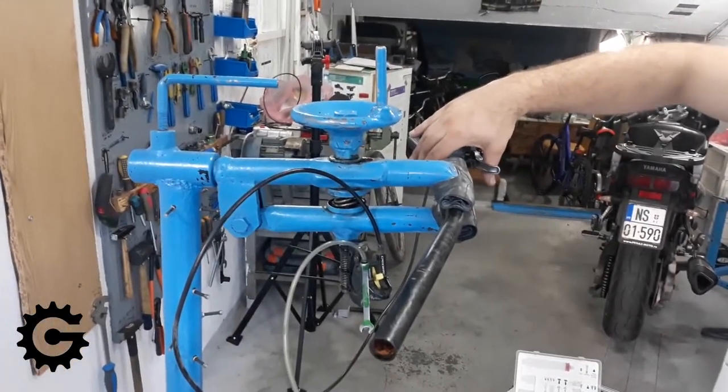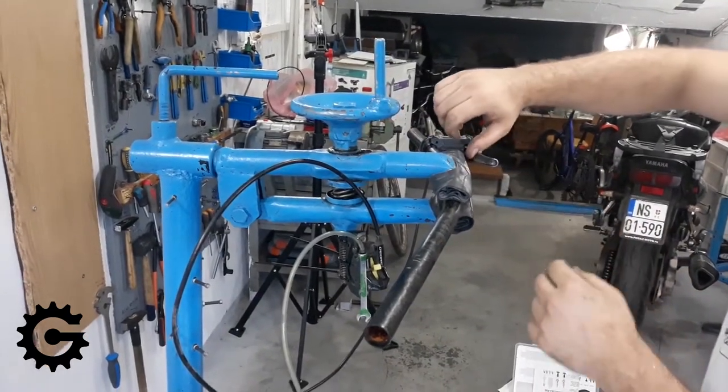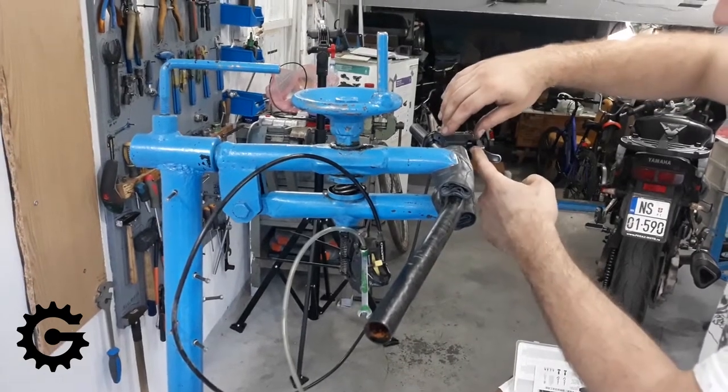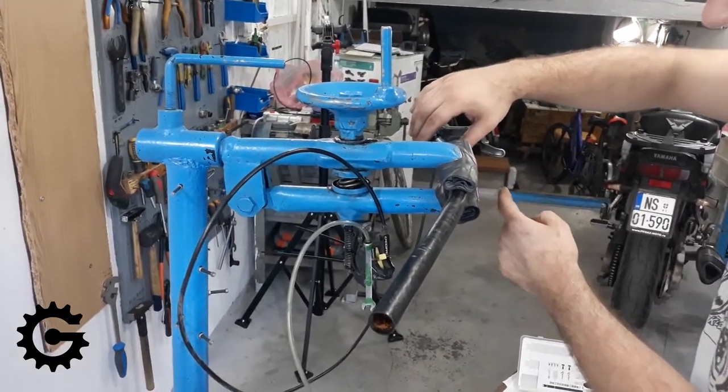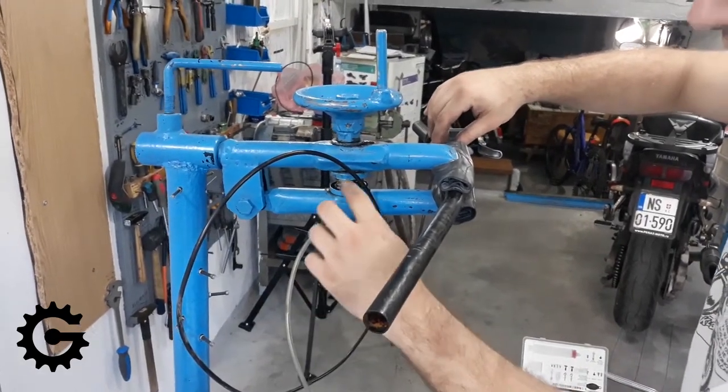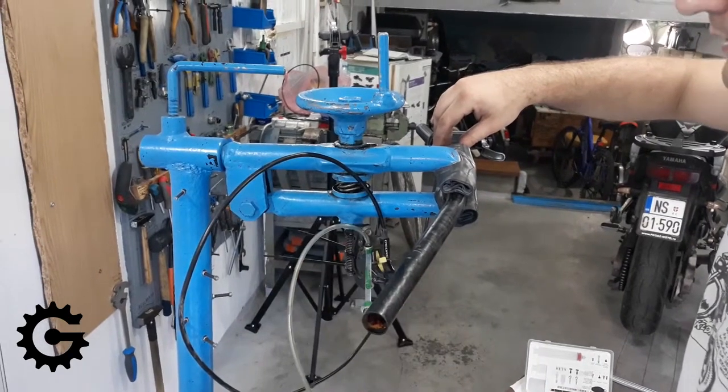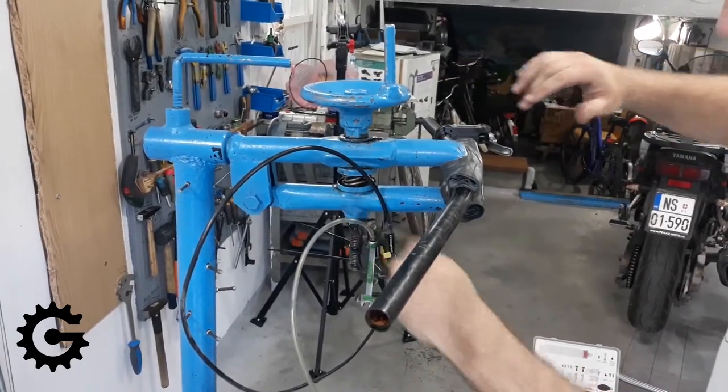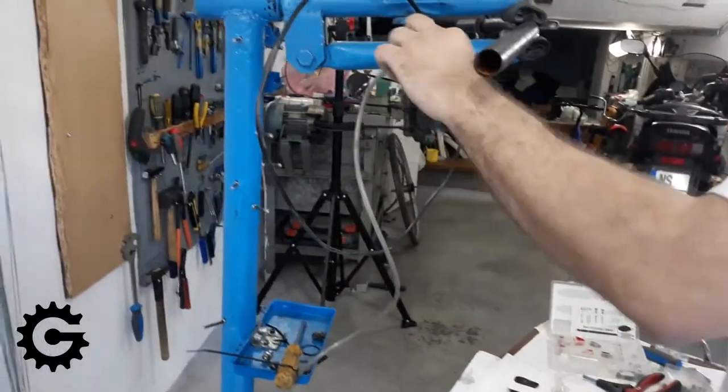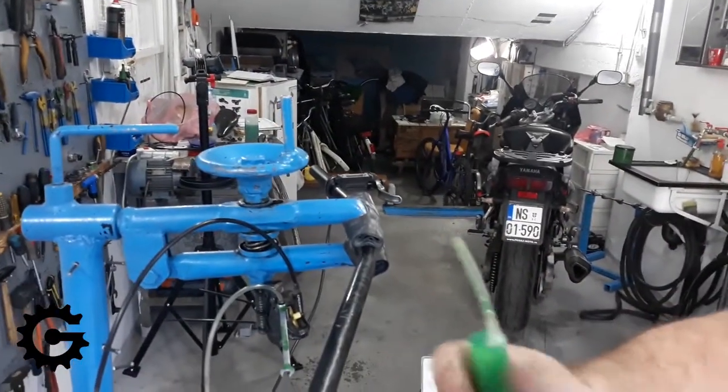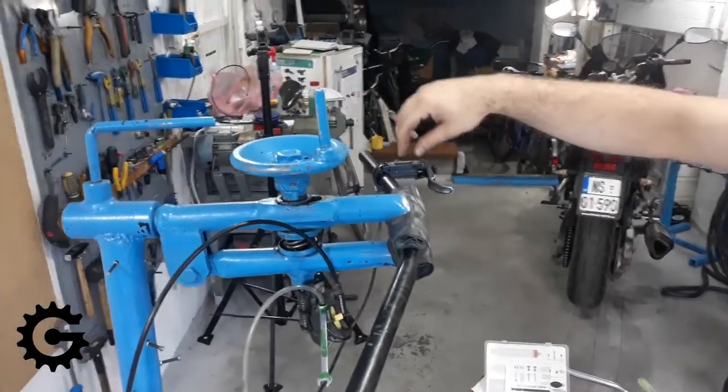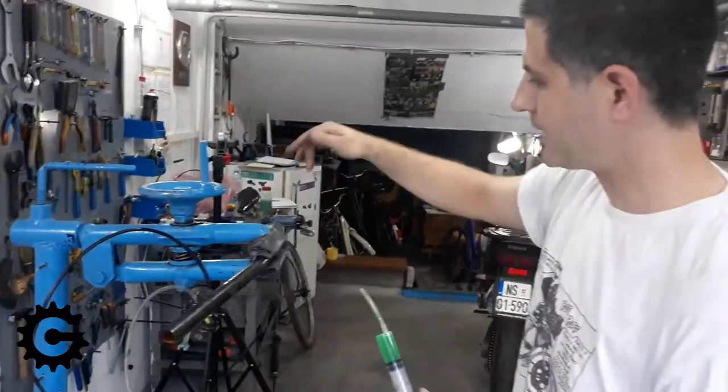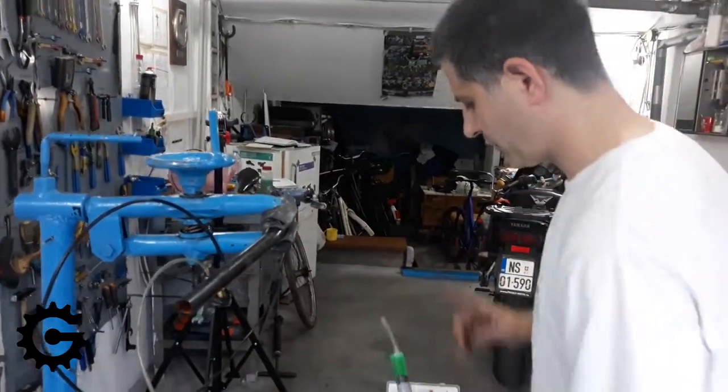Before I release the lever, I will close the nipple, because if I leave it open, air will be pulled back in. We will have oil seal here so no air will enter the system, but at the bleed nipple end we will have air, and I want to avoid that. Before I start, I will gently unscrew the nipple because it's usually very tight.